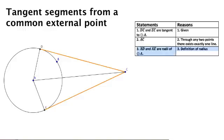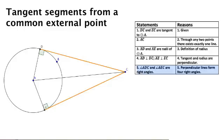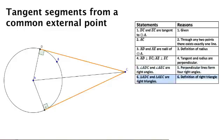As we know, a line tangent to a circle is perpendicular to the radius extended to that point of tangency. So both of these angles are right angles, making both of these triangles right triangles.